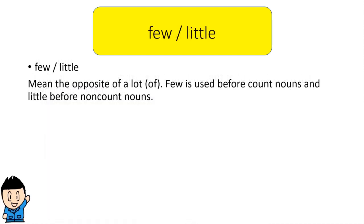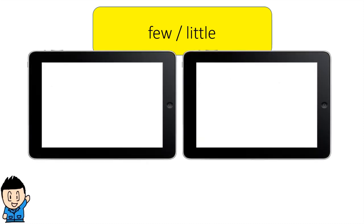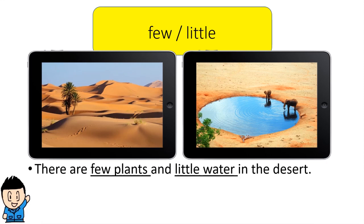Few and little mean the opposite of a lot or a lot of. Few is used before count nouns and little before noncount nouns. Let's see the examples: there are few plants and little water in the desert, right? We can count the plants, one, two, three, but we can't count the water.